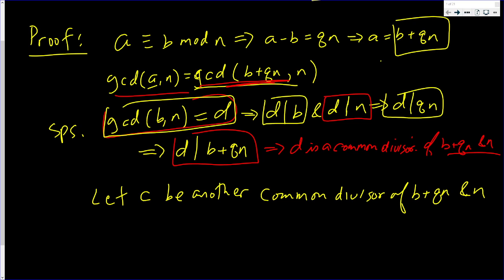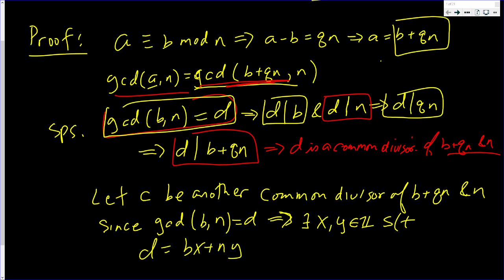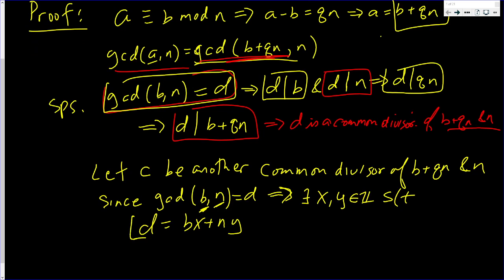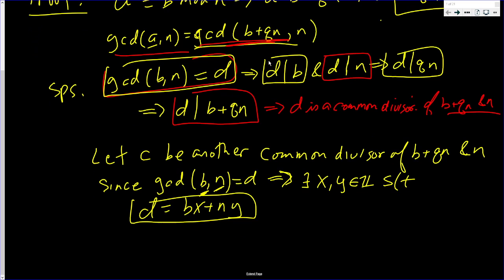It's basically this. Since the GCD of B and N equals D, that implies that there exist integers X and Y such that D is equal to BX plus NY. A linear combination of B and N is D. This is important.